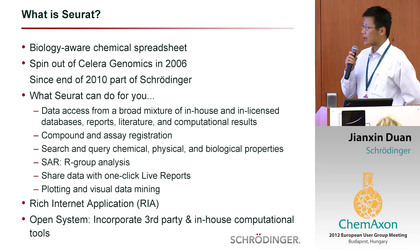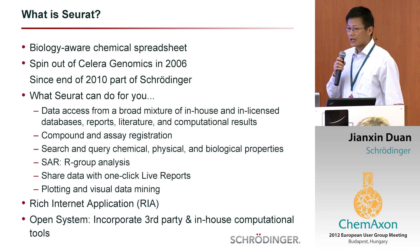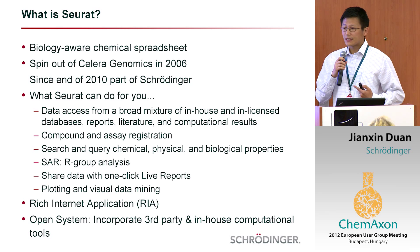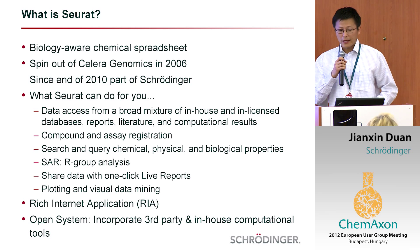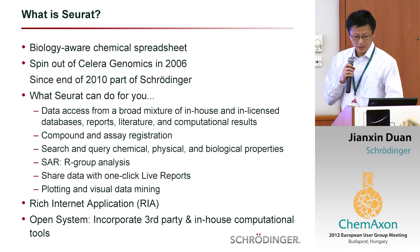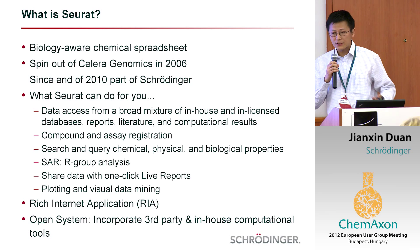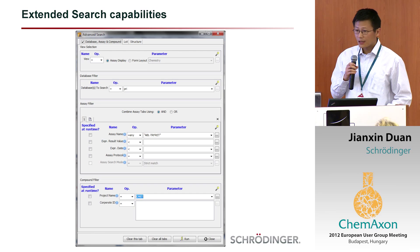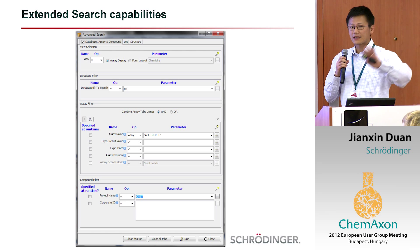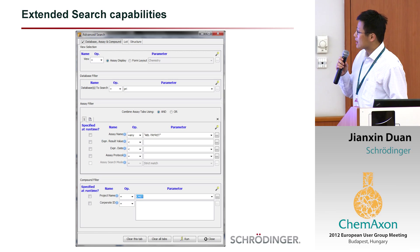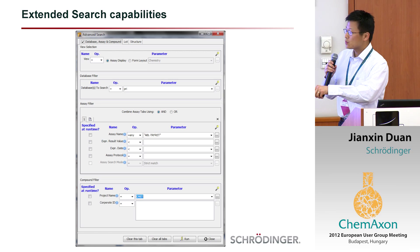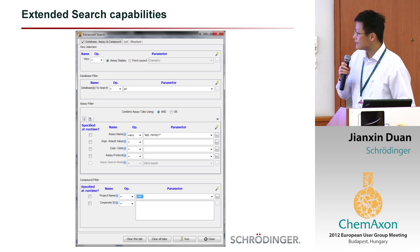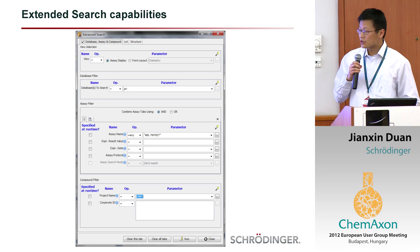It provides the capability of doing compound assay registration. It searches and queries chemical, physical, or biological properties. You can use it to analyze SAR and get an SAR table. You can share your data with your colleagues through one-click live reports, and use it for plotting, visualization, and data mining. It's a rich internet application and an open system — you can incorporate third-party or in-house computational tools into the platform. There is a database filter where you can specify which database to search, assay filters where you can search by assay type and range of activities, and you can add additional tabs to have an AND/OR relationship for the searching.